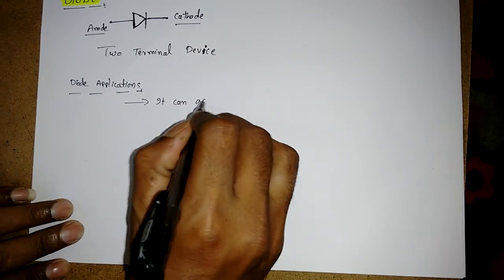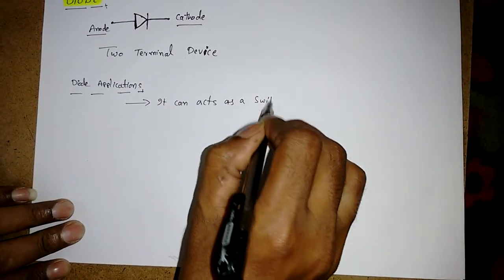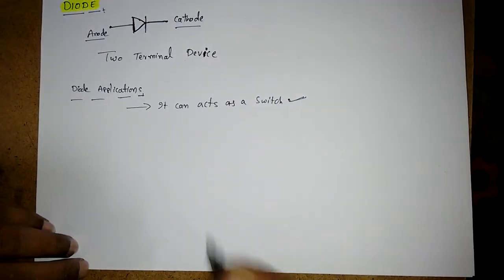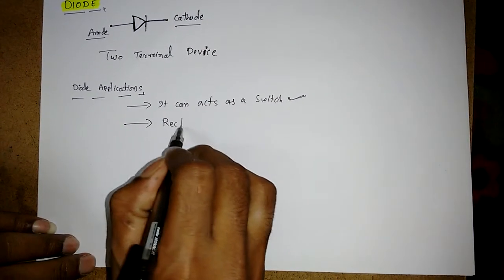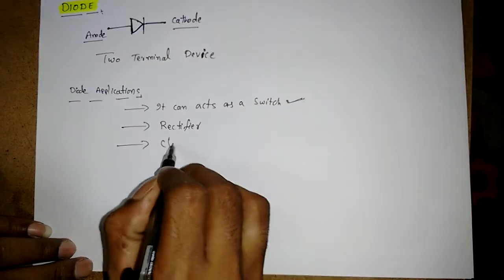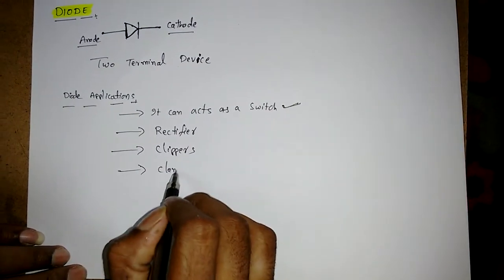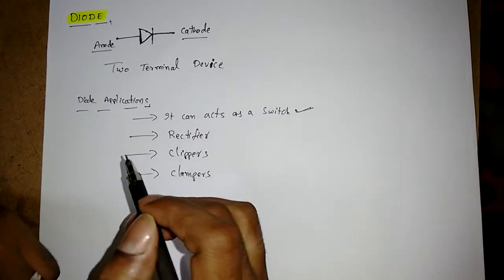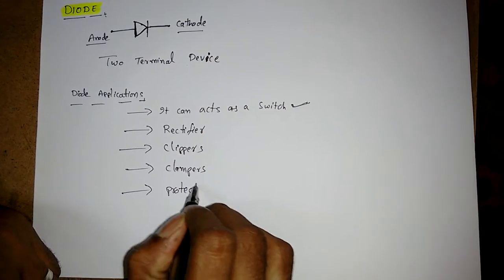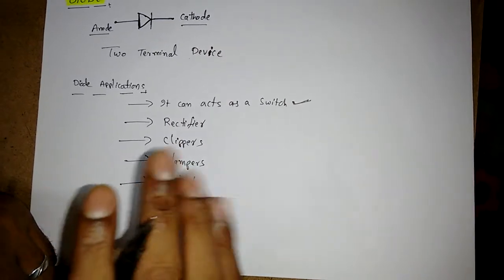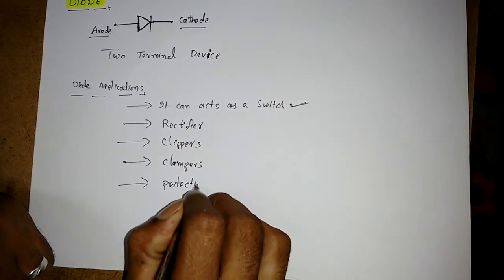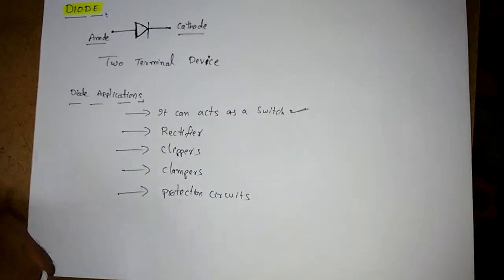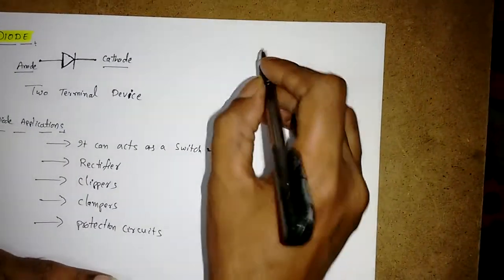What are the diode applications? It can act as a switch — this is the main application, and every other application depends on this. Another application is as a rectifier. Next are clippers, then clampers. The diode is also used in protection circuits — it will oppose or not allow certain currents to flow.